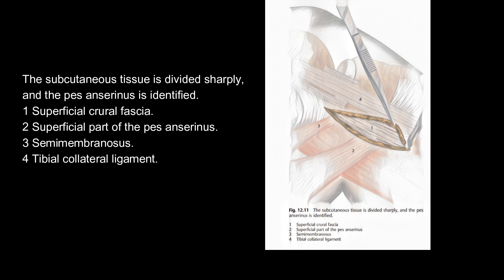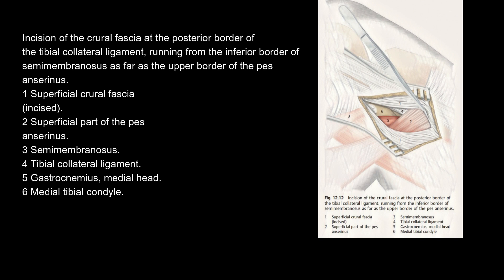The subcutaneous tissue is divided sharply and the Pes anserinus is identified. Structures visible include: superficial crural fascia, superficial part of the Pes anserinus, semimembranosus, and tibial collateral ligament. The crural fascia is incised at the posterior border of the tibial collateral ligament, running from the inferior border of semimembranosus as far as the upper border of the Pes anserinus.